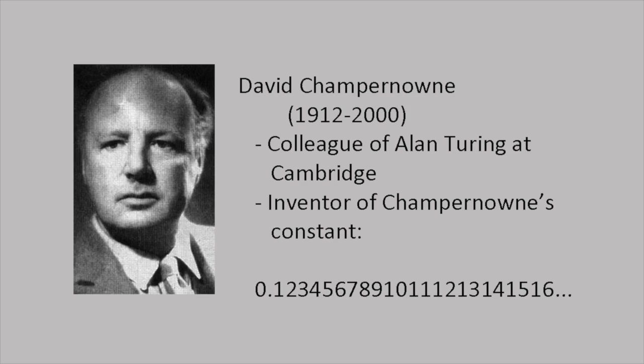Champernowne's constant is made up simply of all the consecutive natural numbers: 0.1234567891011121314, and so on, and therefore contains every possible sequence of numbers in equal proportions. One tenth of the digits are 1, one hundredth of pairs of consecutive digits are 12, and so on.